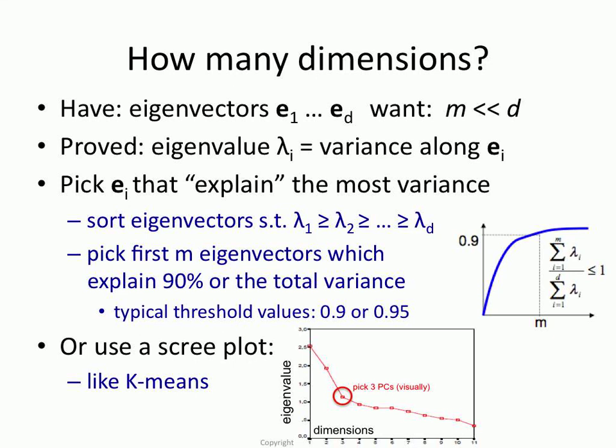Here you get a plot that's kind of similar to what we had with k-means. With k-means, the variance was going down as a function of the number of clusters. Now you have eigenvalues, which are basically the variance, and they also go down as a function of the number of dimensions that you pick.